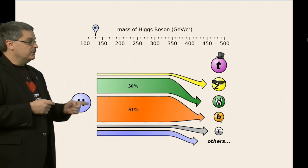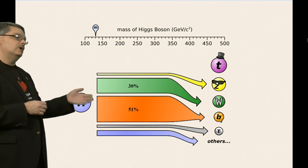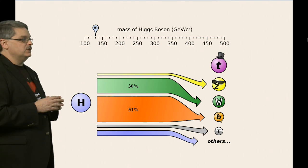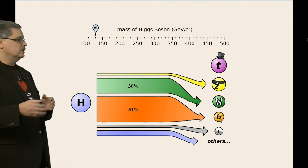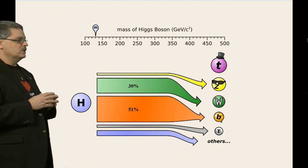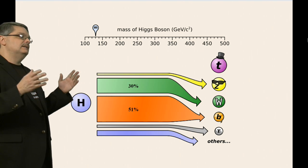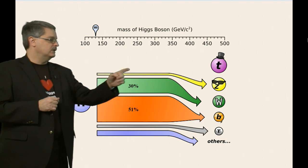For instance, we see in this example that there is a 51% chance that a Higgs boson will decay into a pair of bottom quarks, with a 30% chance that it will decay into a pair of W bosons. There is a much smaller chance that an individual Higgs boson will decay into a pair of Z bosons or tau leptons, and a negligible chance that it will decay into top quarks.